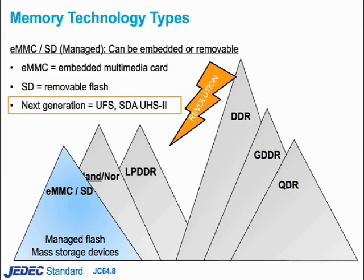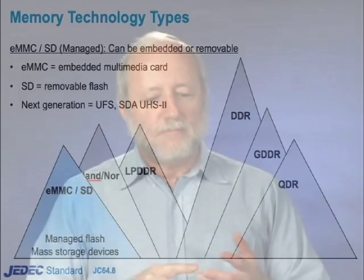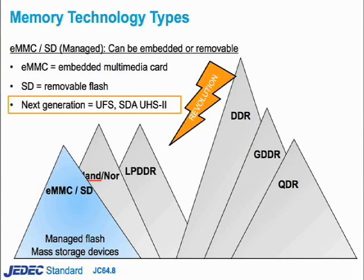As capacity increases, the endurance factor goes down, and this is where managed flash or mass storage devices come into play. These can be either embedded — soldered into a system such as a camera or phone — or removable, such as flash memory on a card, USB device, compact flash, secure digital, or multimedia card. The next generation of those is being defined right now by JEDEC and the Secure Digital Association: one is called UFS, another UHS-II. Neither are available yet. These represent the six basic types of memory technology, each hitting fundamental limits that are driving a revolution in design and testing.